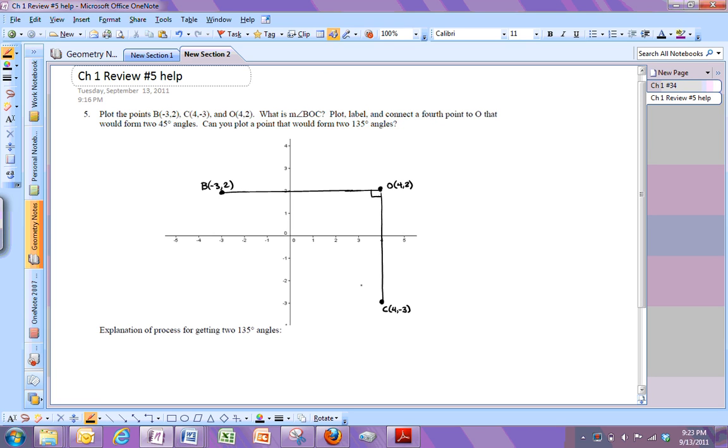Okay, so in this problem, we're given three points. They form an angle BOC, and you have to find a fourth point. You connect to O to make two 45-degree angles.